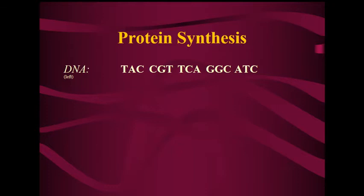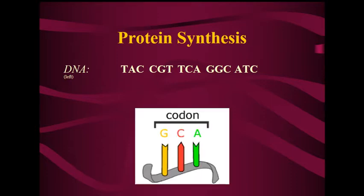Let's start with one strand of DNA — the left side of our DNA molecule. Notice that we have our bases grouped into chunks of three. When we have three bases together, that is called a codon — a code word that means a specific amino acid. In that DNA sequence, we have five different codons, so that DNA code has the instructions for potentially five different amino acids.